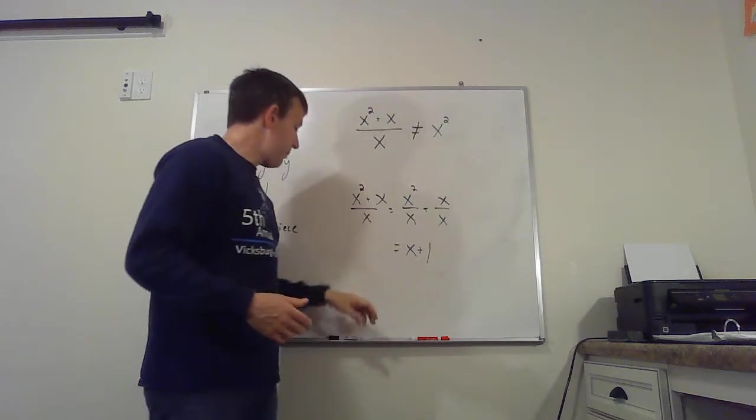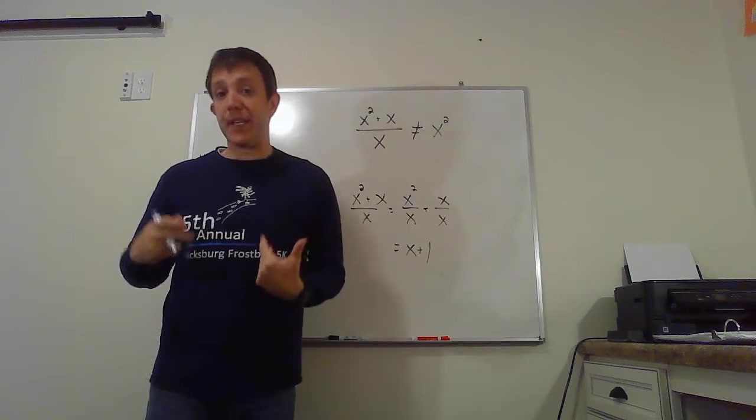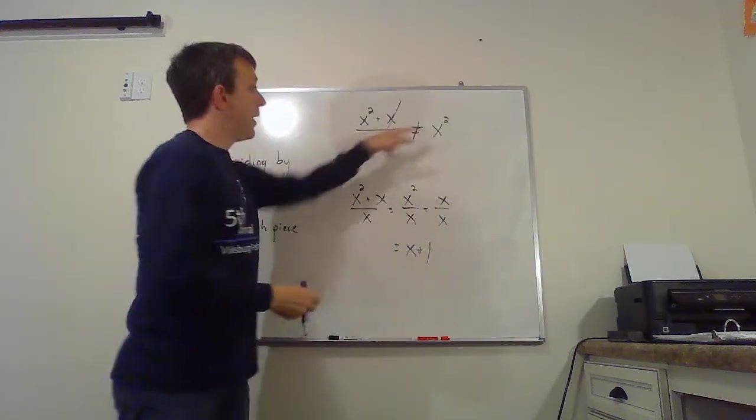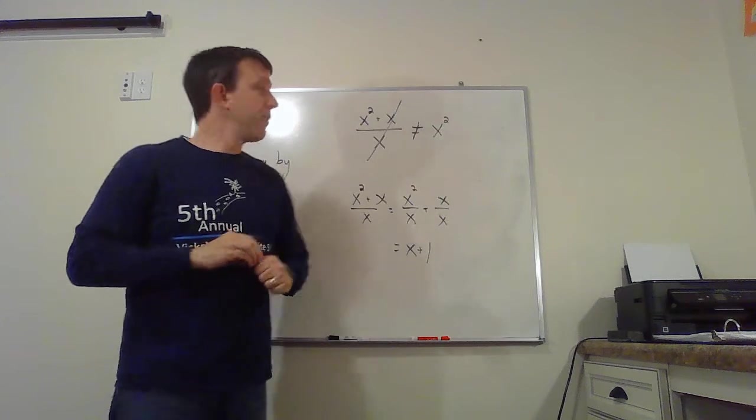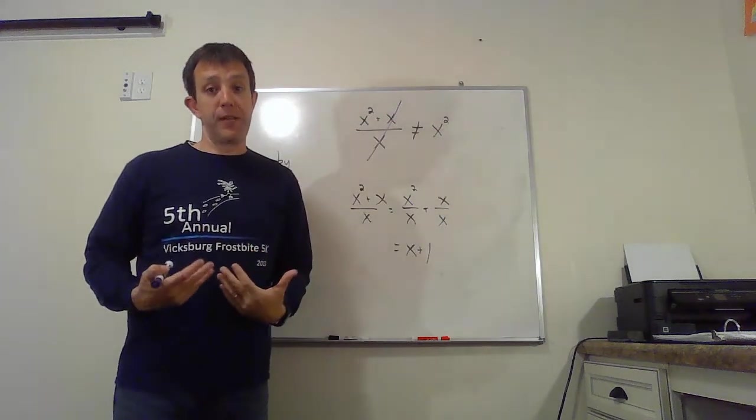A really common mistake people make here is to say, hey, look, I've got an x on the top and an x on the bottom. Let me just get rid of them. They basically do this. Goodbye. And they call it x squared. Unfortunately, that doesn't work. Because this x is connected to the x squared by addition, we're not allowed to do that.